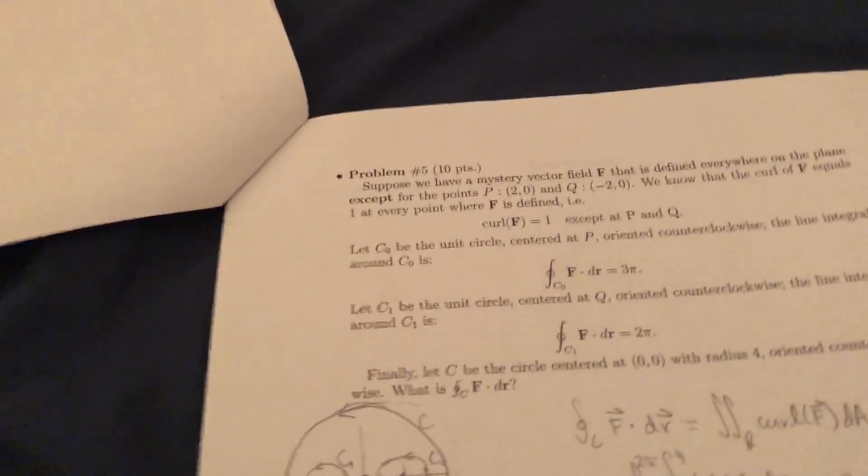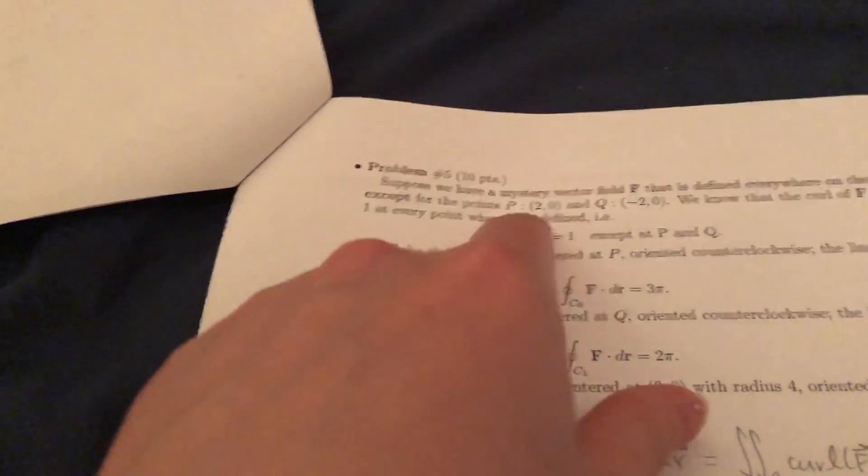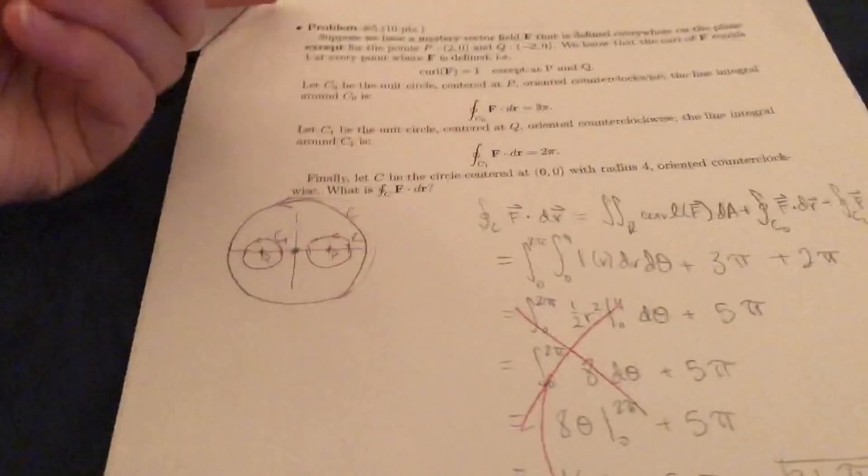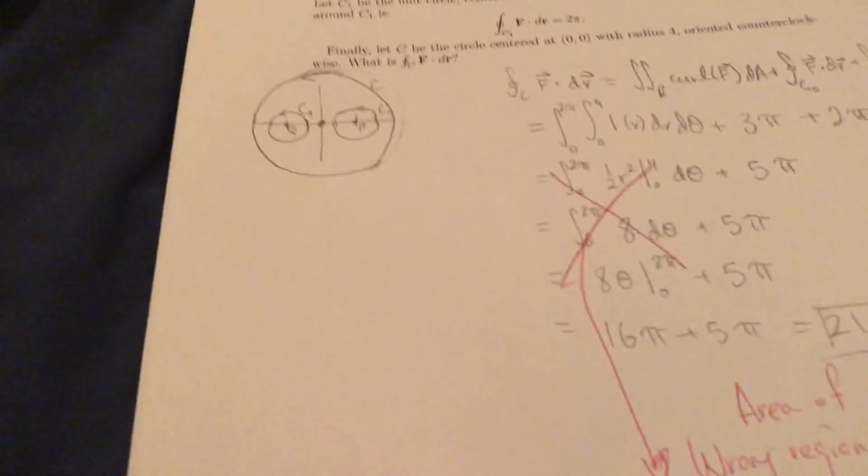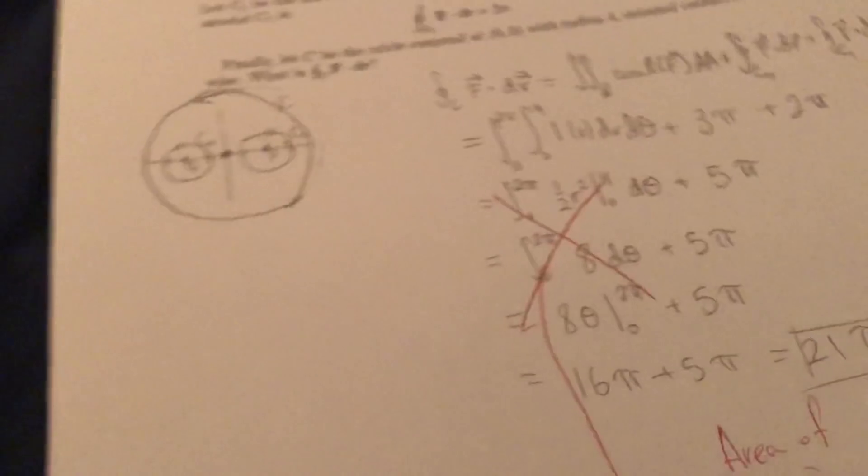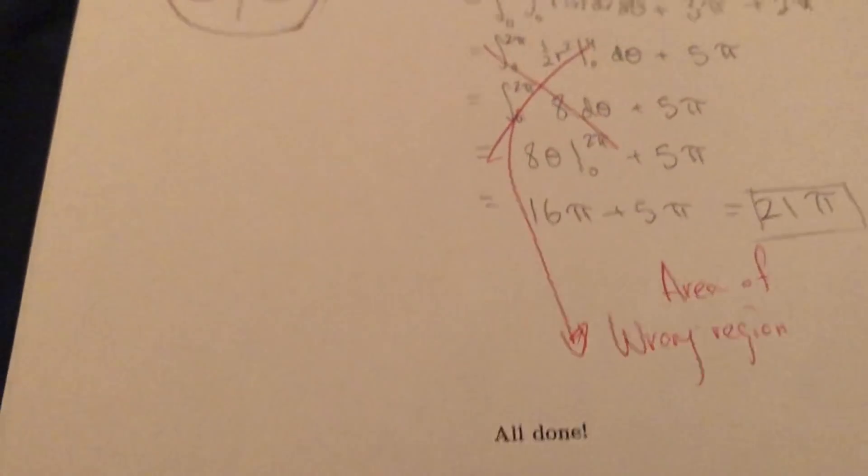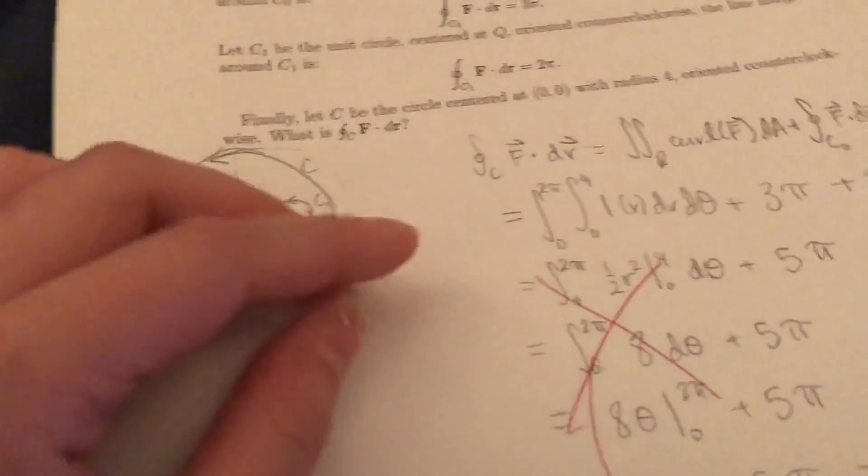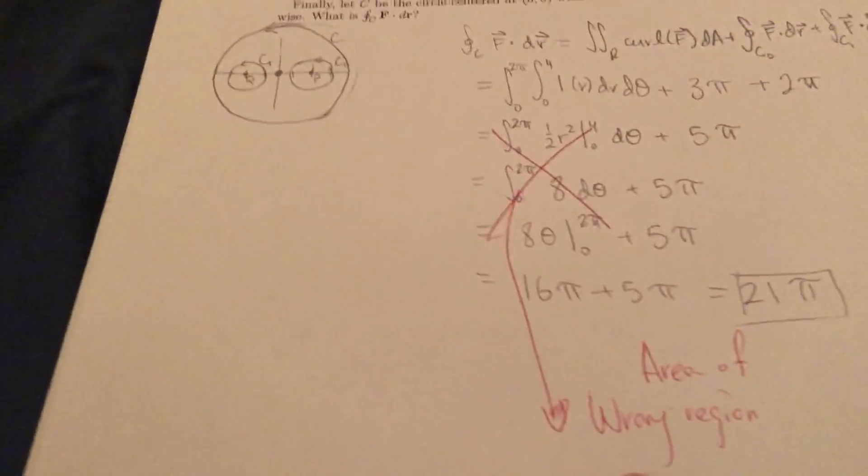And another problem. Suppose we have mystery vector field f. So this is a really long problem you have to read through. And apparently I did the area of the wrong region. Sad. Yeah. How many points was this problem worth? Five. So I got six out of ten. Okay. So apparently maybe I got the right area. It was just the wrong region. That's kind of sad. Yeah. And then scratch paper. No trigonometric identities in this one. Yep. So those were the calc tests.